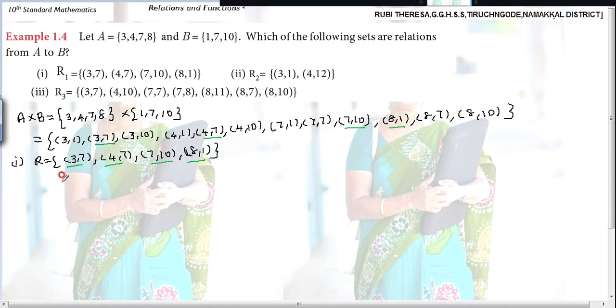Therefore, R1. These elements are belongs to 3,7 and 4,7, 7,10, 8,1. It is an element of A cross B. Therefore, R1 is the subset of A cross B. Hence, R1 is a relation from A to B. Do you follow?